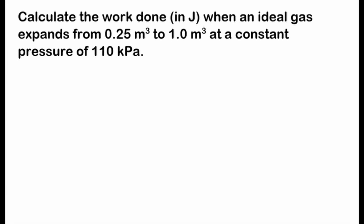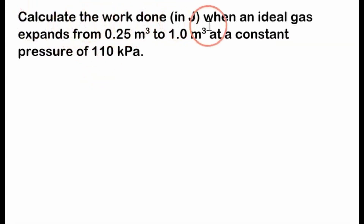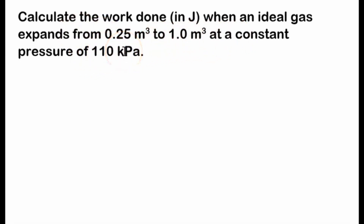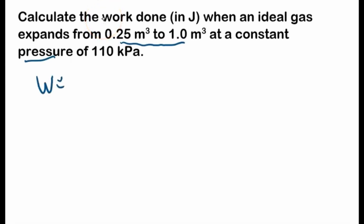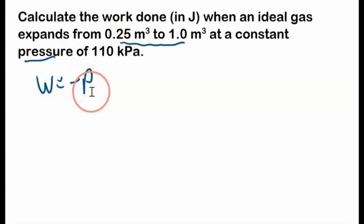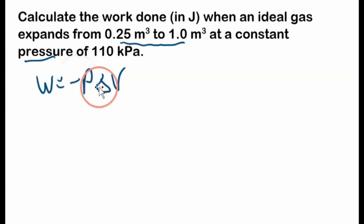Let's do our first exam problem. This is an easy one, but there's an important thing about units we should talk about. Calculate the work done in joules when an ideal gas expands from 0.25 m³ to 1.0 m³ at a constant pressure of 110 kilopascals. We have pressure and the changing volume, so we use the equation we just derived: work equals negative P times delta V. Since pressure is constant, we plug in this pressure.